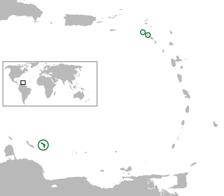Bonaire is one of the Leeward Antilles and is located close to the coast of Venezuela. Sint Eustatius and Saba are in the main Lesser Antilles group and are located south of Sint Martin and northwest of St Kitts and Nevis.